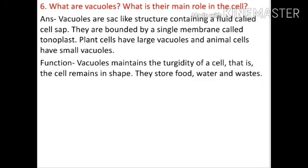Question six: what are vacuoles and what is their main role in the cell? Answer: vacuoles are sac-like structures containing a fluid called cell sap. They are bounded by a single membrane called the tonoplast. Plant cells have large vacuoles; animal cells have small vacuoles. Function: vacuoles maintain the turgidity of the cell so it remains in shape, and they store food, water, and wastes.